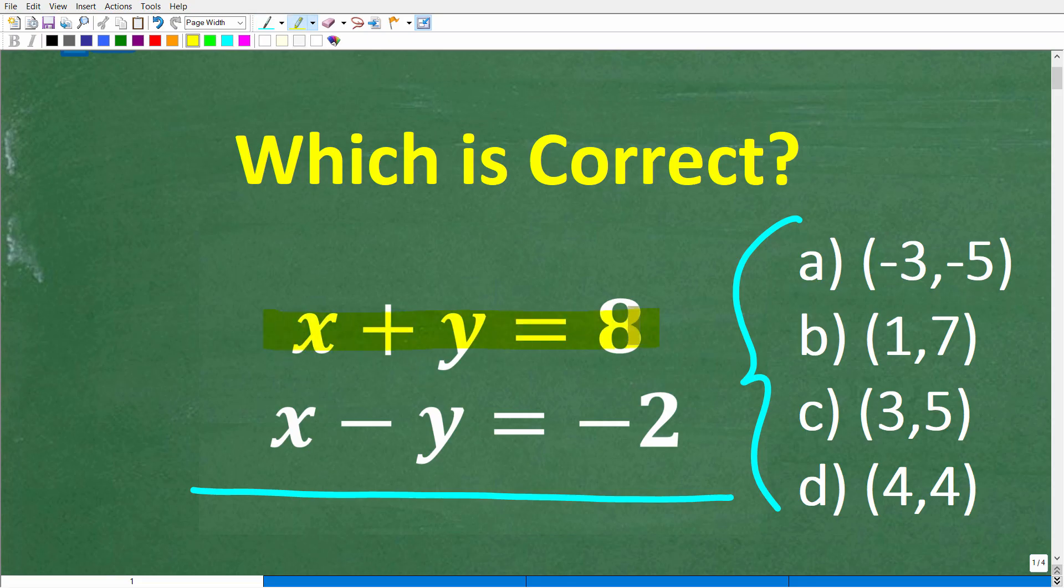We have x plus y equals 8 and x minus y equals negative 2. This is a multiple choice question. Our answer choices are: A is negative 3, 5; B is 1, 7; C is 3, 5; and D is 4, 4.